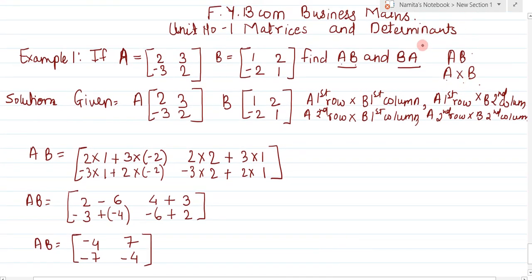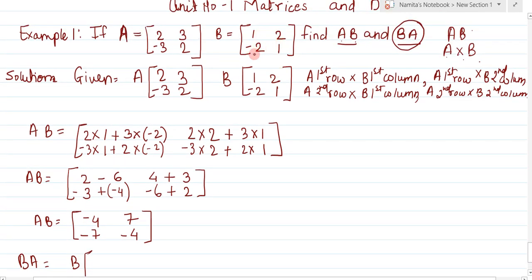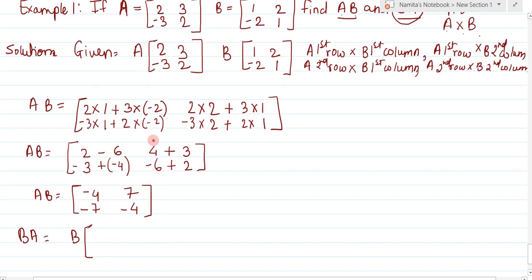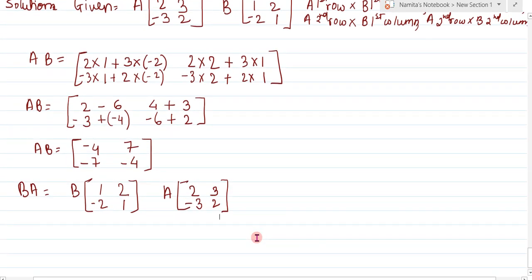Now we have to find BA. B matrices is 1, 2, minus 2, 1 and A matrices is 2, 3, minus 3, 2. So BA means B matrices will be multiplied by matrices A.